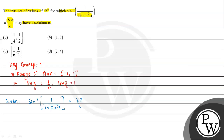We have seen that the range of sin x is from minus 1 to 1. So the range of sin squared x — since all values become positive — will be from 0 to 1. Now if we find the range of (1 plus sin squared x), it will go from 1 to 2.